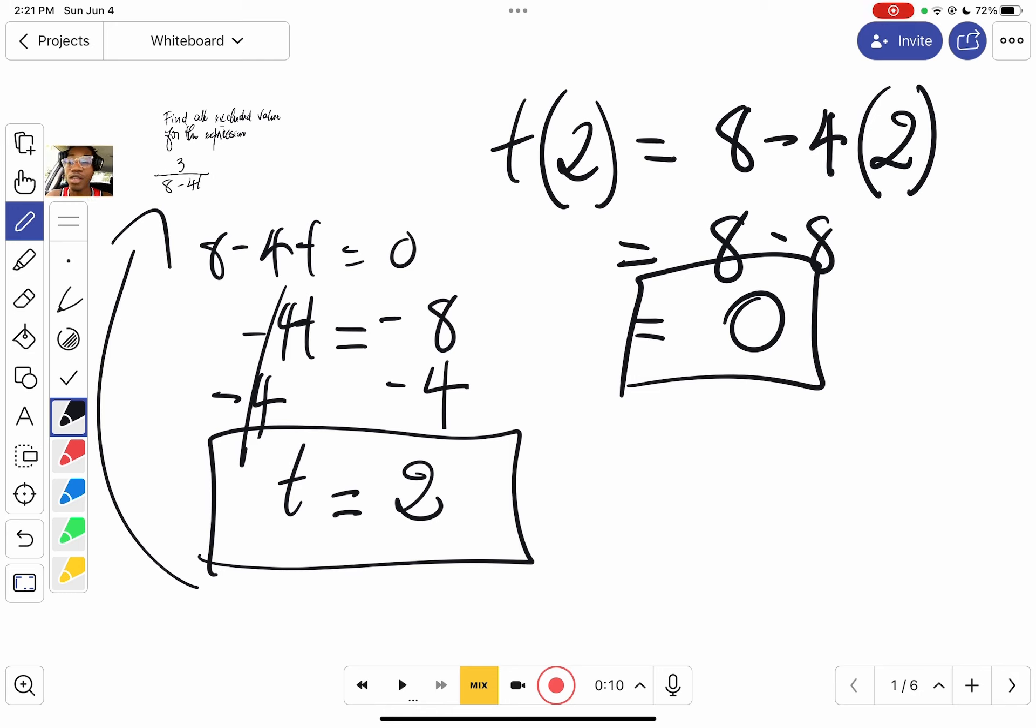Not thus will be the final answer—2 will be our final answer, because 2 is the excluded value that they're talking about for the given expression, which is 3 over 8 minus 4t. See you guys in the next one.